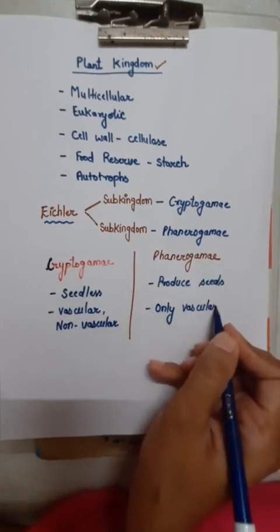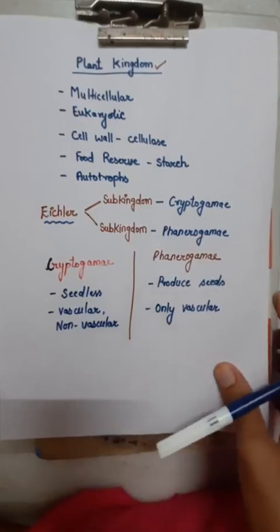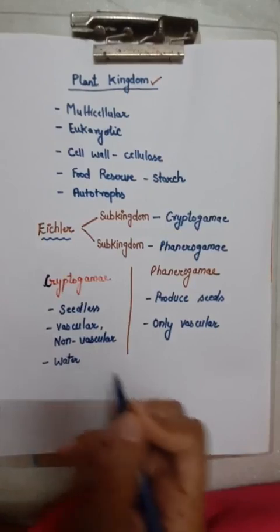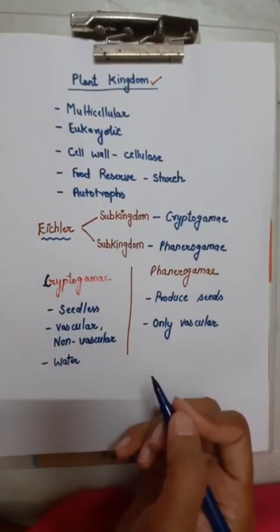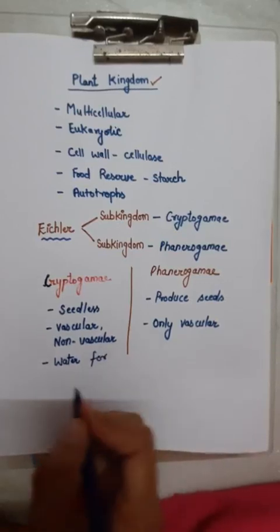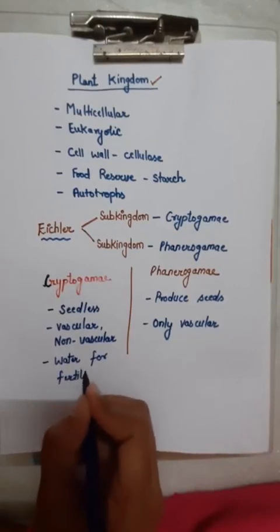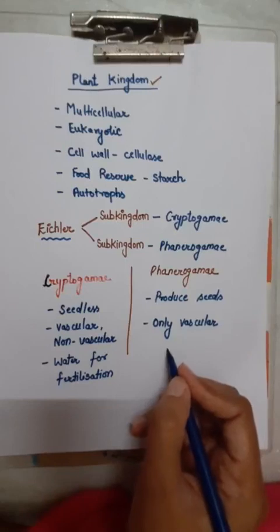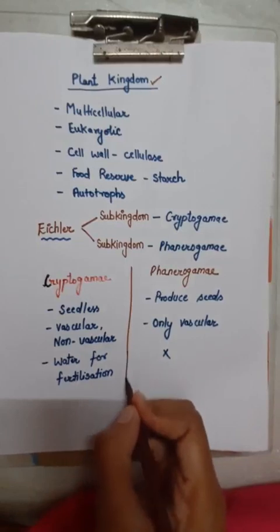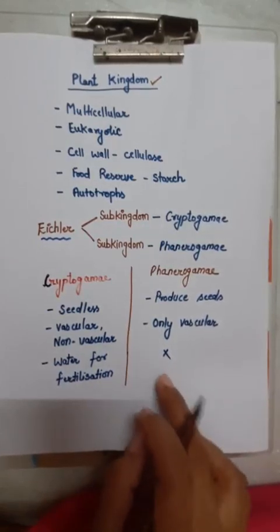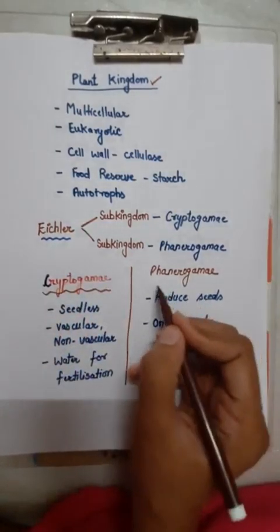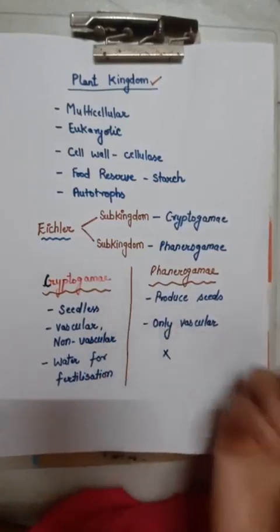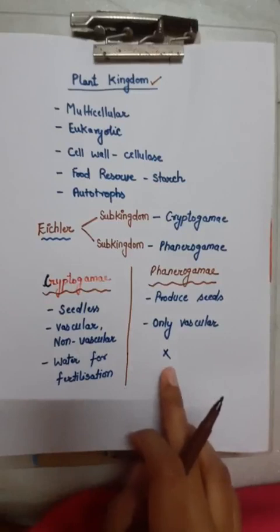In Cryptogamae, they need water for fertilization because the male gamete has to swim up to the female gamete. An external layer of water is needed for fertilization. Phanerogamae do not need external water for fertilization. This is the key difference between Cryptogamae and Phanerogamae.